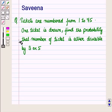Hello and welcome to the session. In this session we discuss a question which says that tickets are numbered from 1 to 75, one ticket is drawn. Find the probability that the number of the ticket is either divisible by 3 or 5.